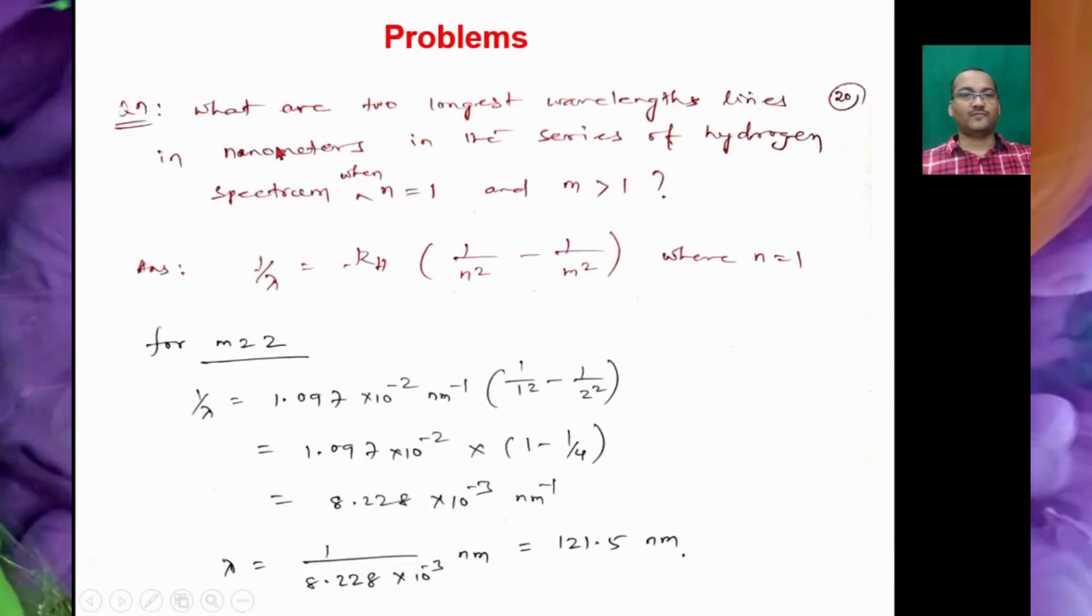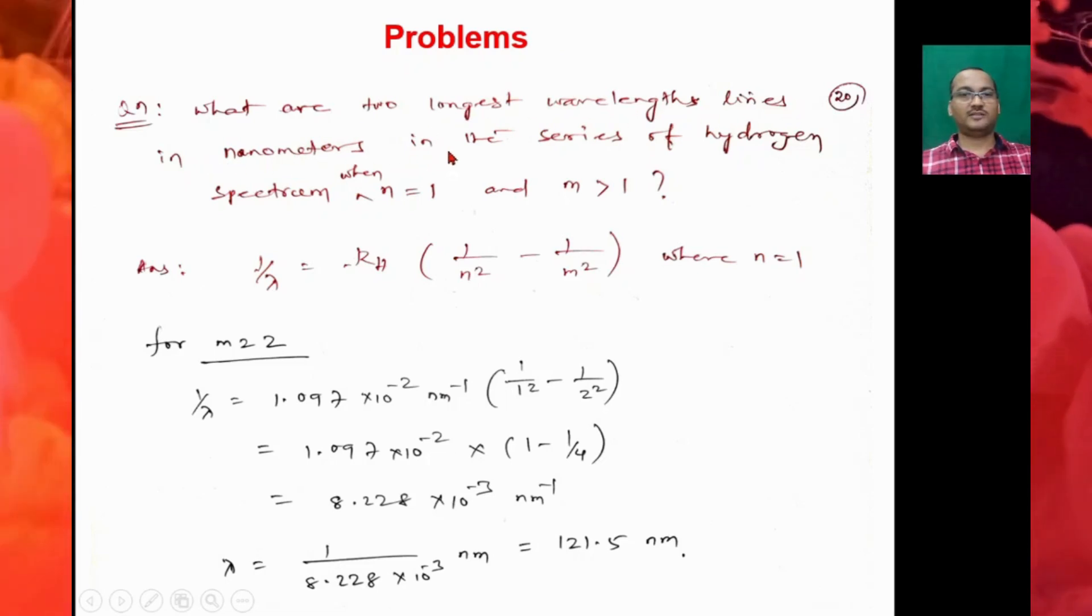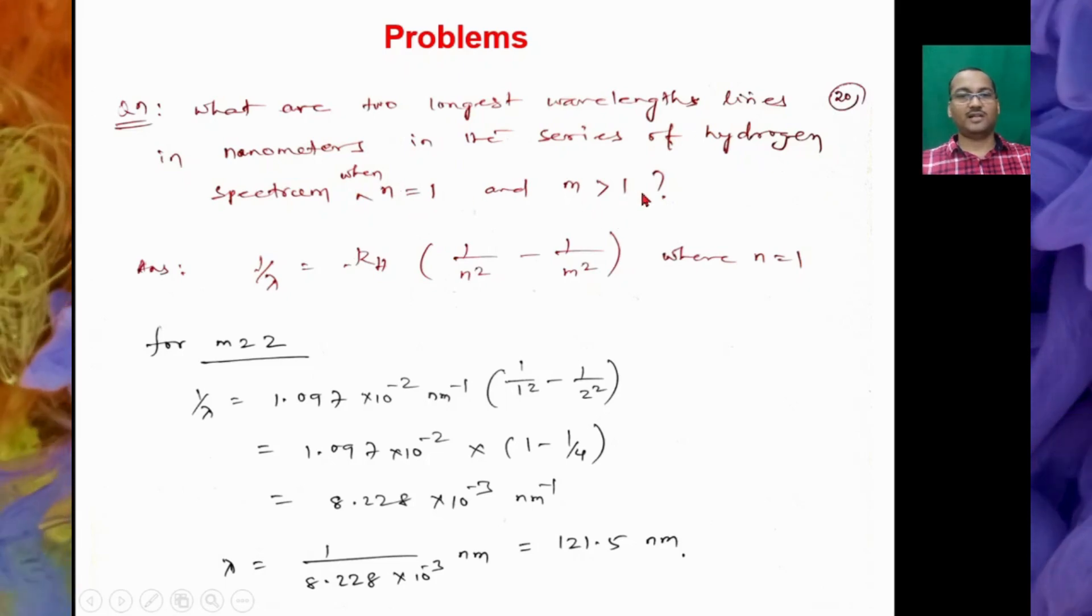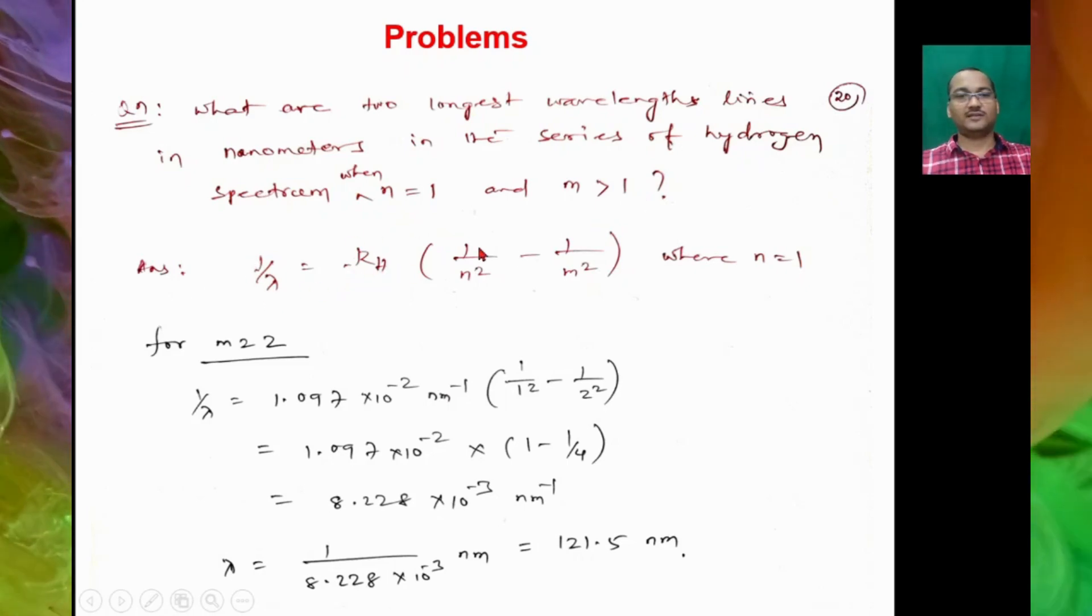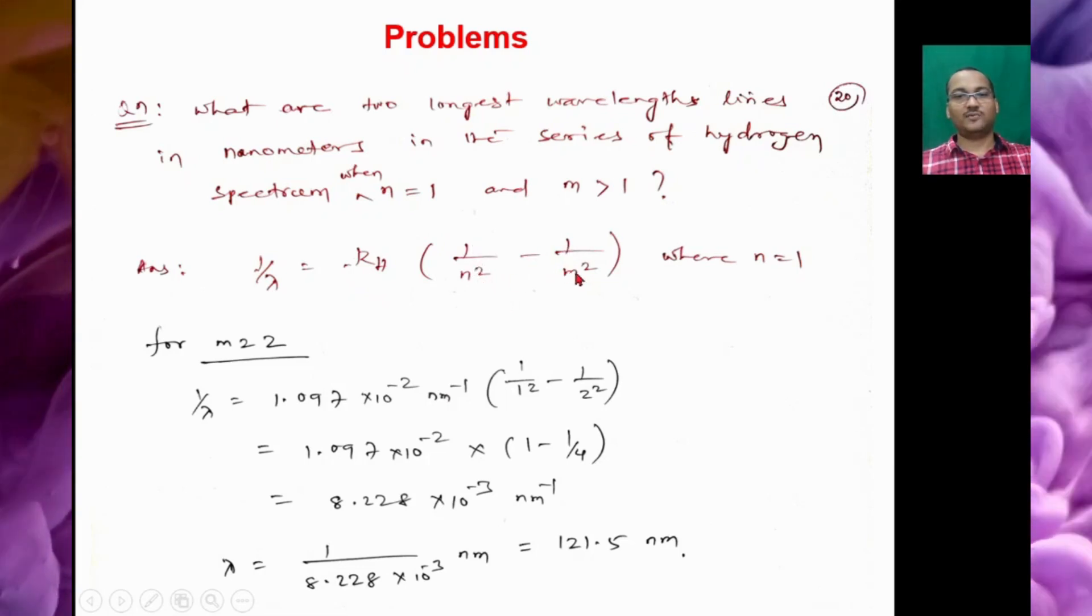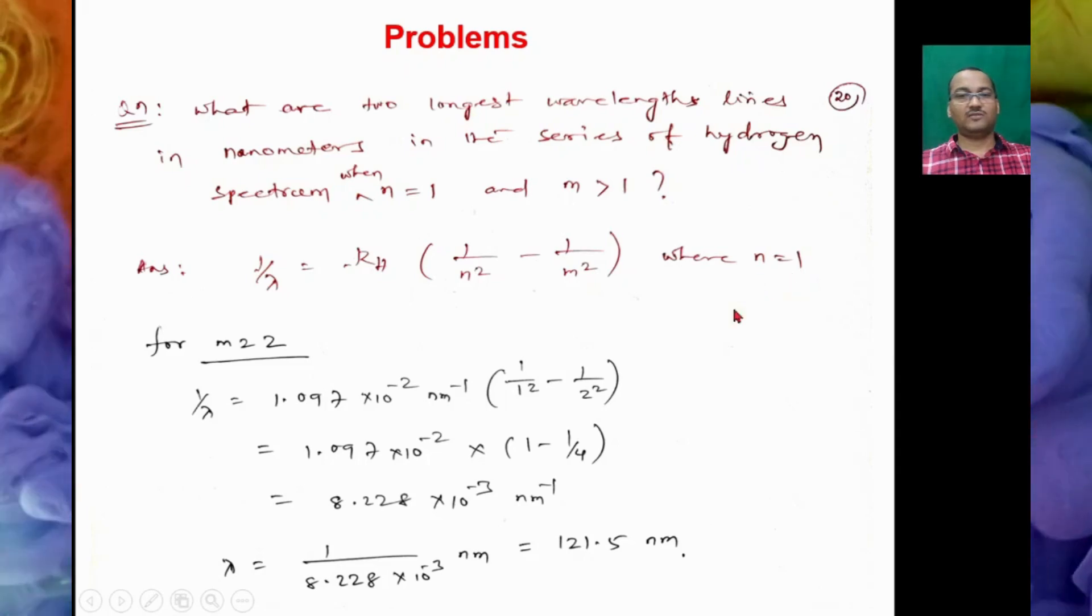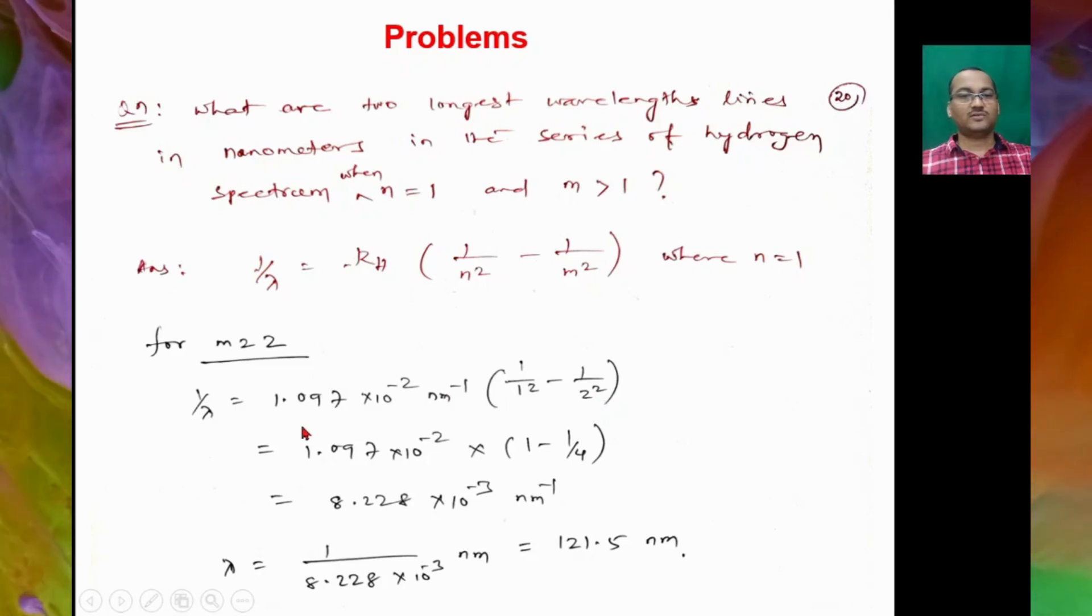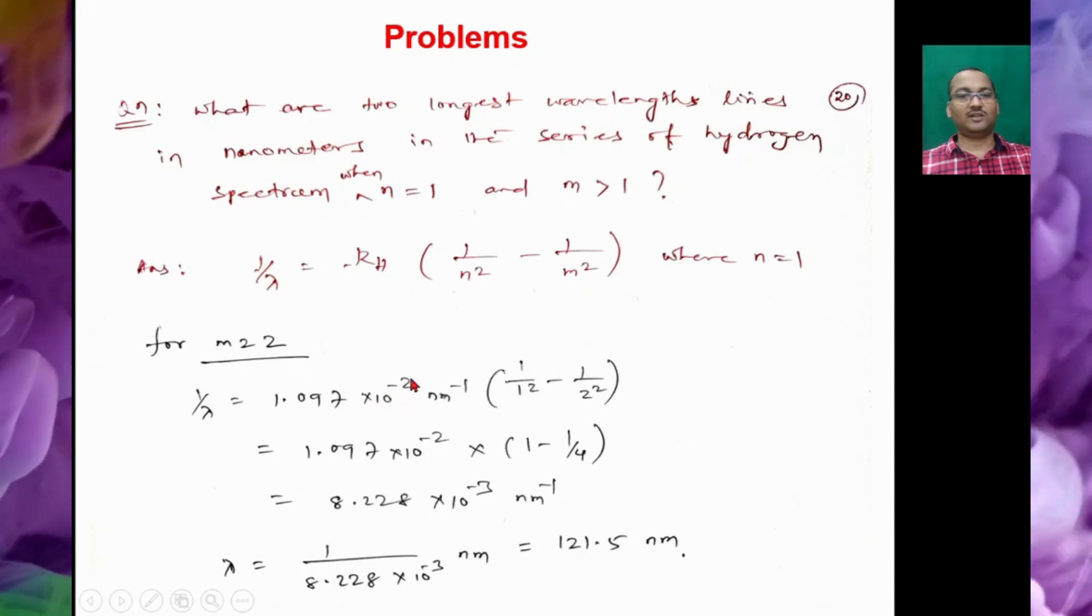So let's try some problems. What are the two longest wavelength lines in nanometers in the series of hydrogen spectrum when N = 1 and N greater than 1? So we know the formula: 1/λ = RH × (1/N₁² - 1/N₂²). So here N₁ = 1 and N greater than 1 means it can be 2. So if we put the values of RH, that becomes 1.097 × 10⁻² nanometer inverse, all into 1/1² - 1/2².